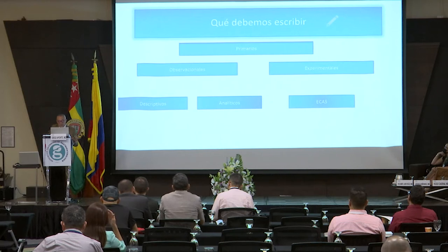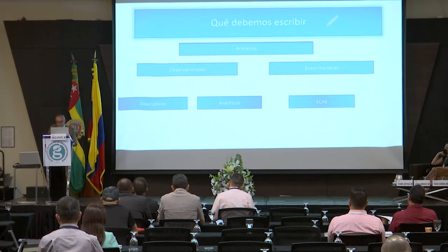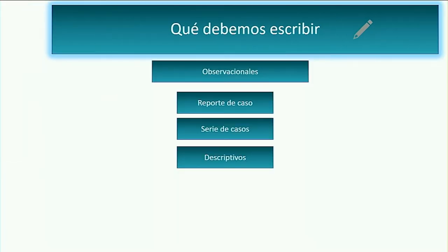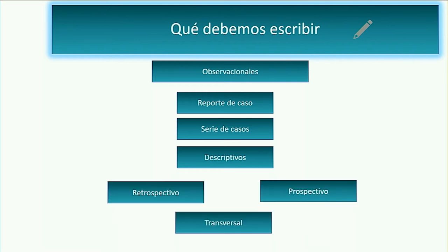También tenemos estudios primarios observacionales, que pueden ser descriptivos o analíticos, o experimentales como los ensayos clínicos aleatorizados. Dentro de los observacionales podemos publicar reportes de casos, algunas veces desacreditados; sin embargo, recuerden que el VIH fue descubierto en un reporte de caso, el Pneumocystis carinii fue publicado en una revista internacional y por primera vez se reconoció el VIH. La serie de casos, cuando ya se tiene una combinación de estos, o estudios descriptivos, que no necesariamente son prospectivos sino pueden ser retrospectivos, prospectivos y transversales.